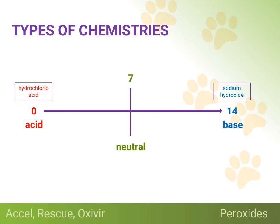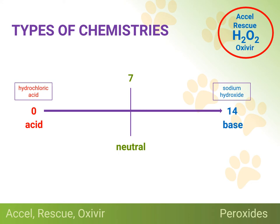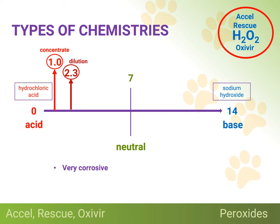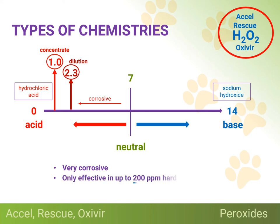Now let's take a look at some of the accelerated hydrogen peroxide products — Xcel, Rescue, and Oxivir — for a few moments. As you can see, these chemistries are very corrosive, having a low pH of 1.0 in the concentrate and a pH of 2.3 in dilution. That's not too far away from the same acidity as seen with battery acid and hydrochloric acid. Remember, the farther one moves away from a neutral pH of 7.0, the more corrosive and damaging to surfaces, and the more potentially harmful a product can be to animals and people. Also, these products are only effective in up to 200 parts per million of hard water, whereas most other disinfectant chemistries can demonstrate efficacy capabilities in 400 to 600 parts per million of hard water. These peroxides also leave a residue on surfaces. Consider some of these additional bullet points.